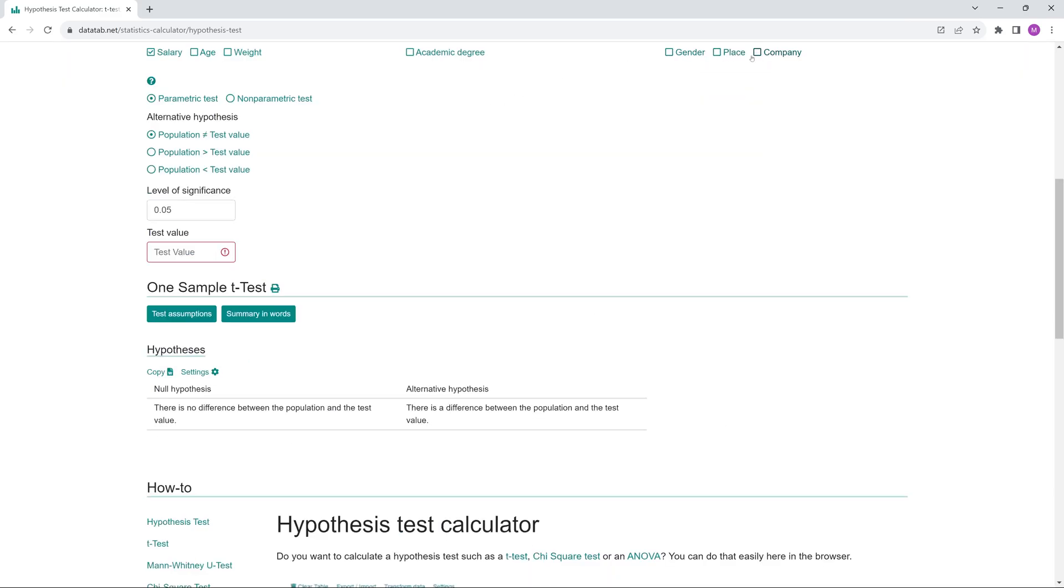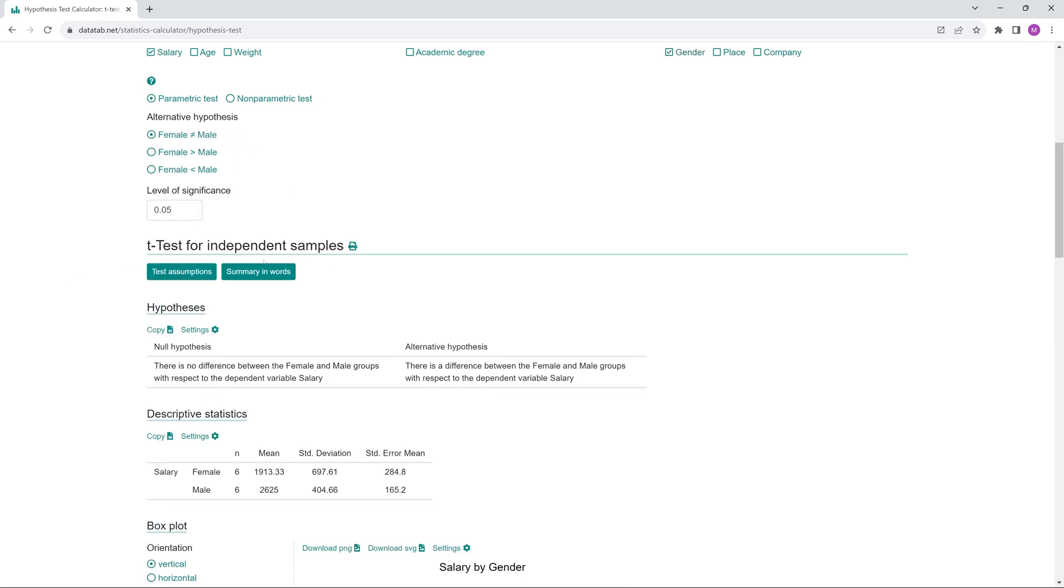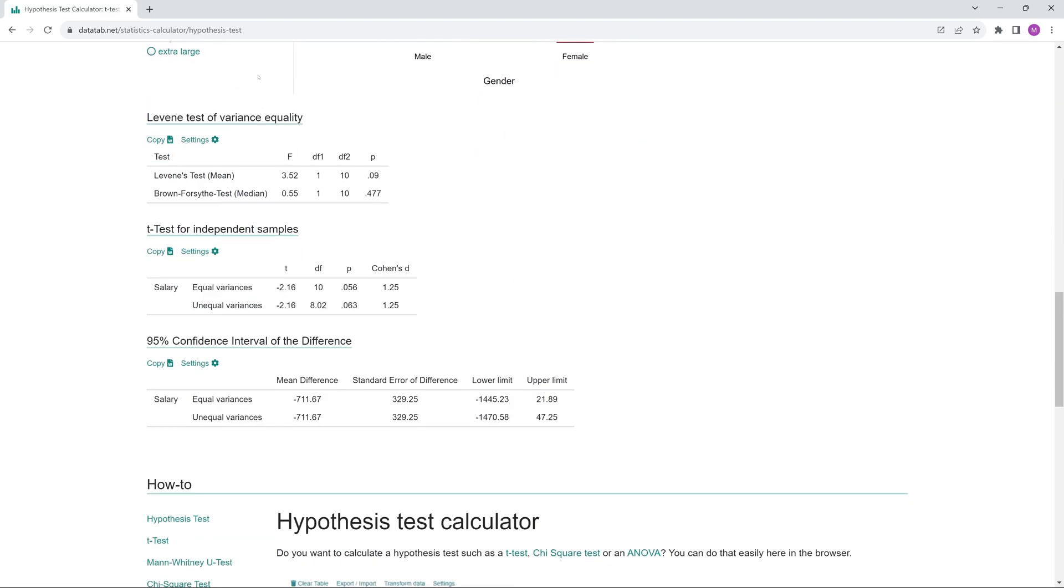In an independent t-test, you will find Levene's test at the bottom of the results. If equality of variance is not given, you can use the t-test for unequal variance.